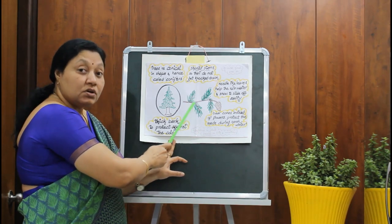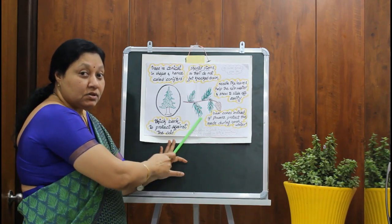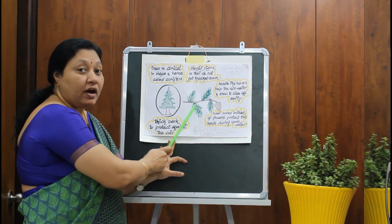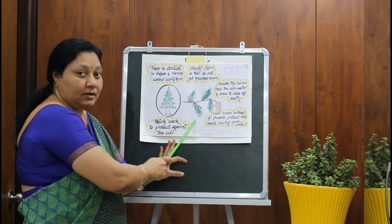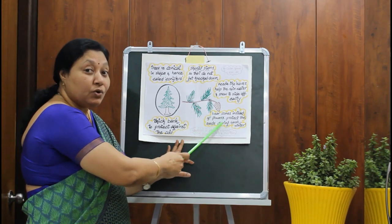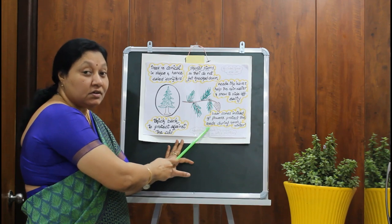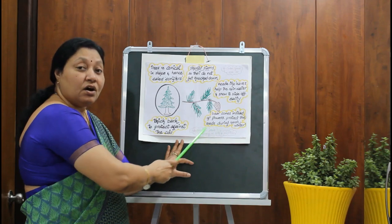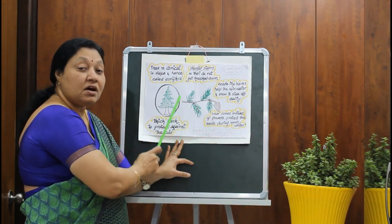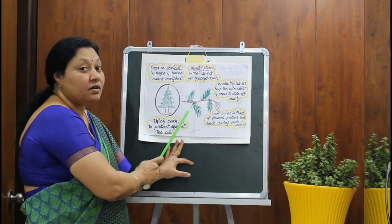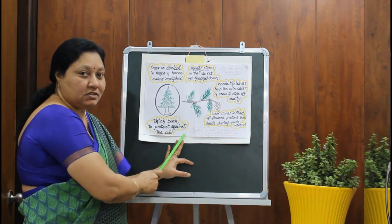Hills and mountains are places where they get heavy rains and snowfall, so these needle-like leaves help in sliding off the snow and rain water easily. These trees bear cones instead of flowers so that they protect the seeds inside the cones. These are all the special features observed in trees growing on hills and mountains.